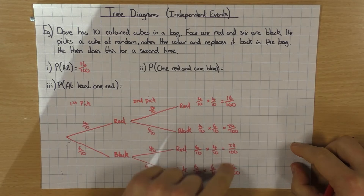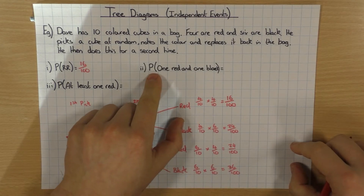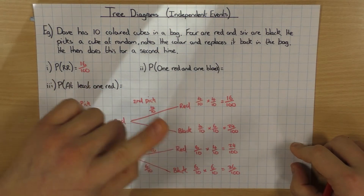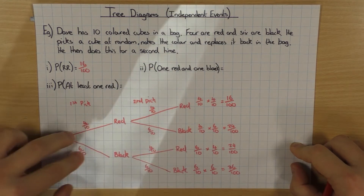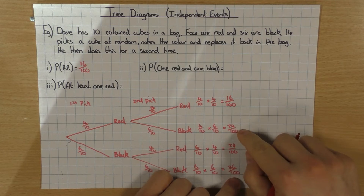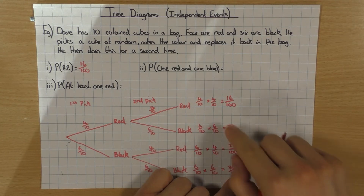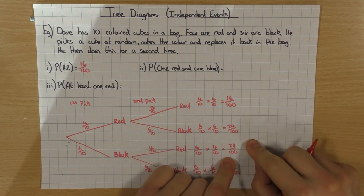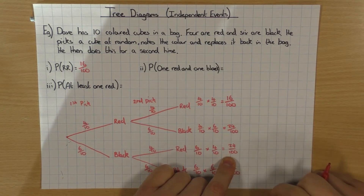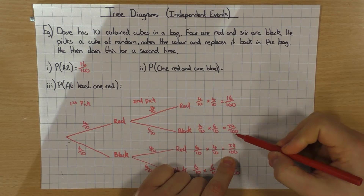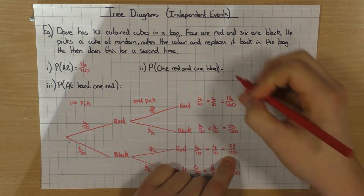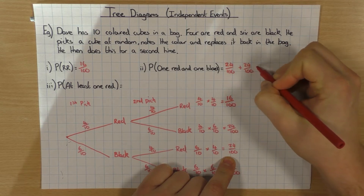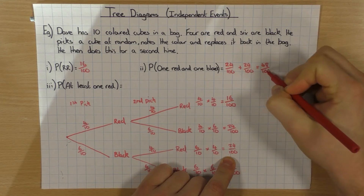The reason why I don't simplify is this: if you want to work out the probability of getting one red and one black, there are two options — red then black, or black then red. When you have two different ways, you add the probabilities. When you add fractions, the denominator needs to be the same. Because I haven't simplified, my denominator is already the same. So it's twenty-four over one hundred plus twenty-four over one hundred, which gives forty-eight over one hundred.